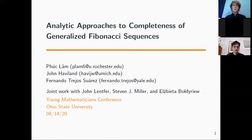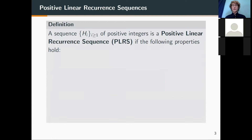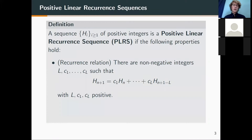To start things off, we're going to define which generalization of the Fibonacci sequence we're going to use. These are called positive linear recurrence sequences, and they satisfy two properties. The first is a recurrence relation, which is a homogeneous linear recurrence with non-negative coefficients where the first and last coefficients are positive.